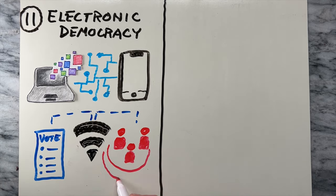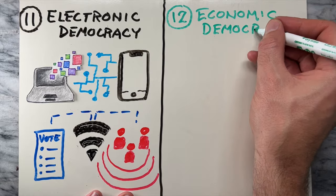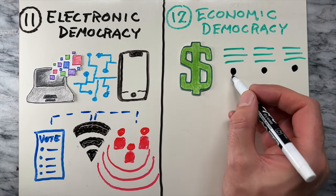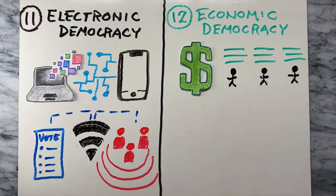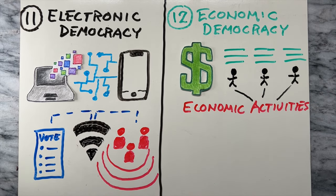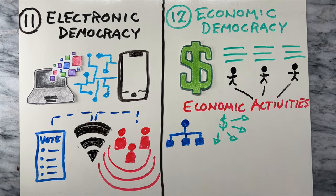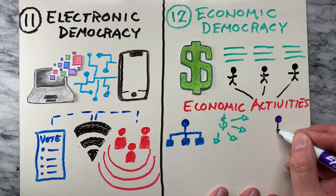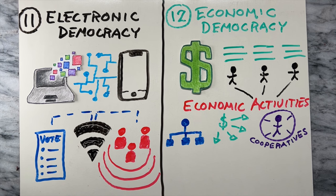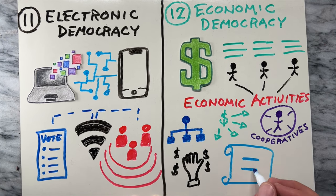Lastly, economic democracy refers to a system in which economic decisions and resources are distributed more equally among members of a society. It aims to give individuals and communities a greater say in how economic activities are organized and how wealth is distributed. This can be achieved through various means, such as workplace cooperatives, participatory budgeting, and policies that promote income equality.